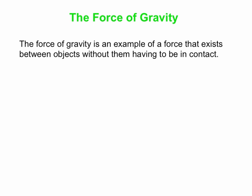Let's now talk about the force of gravity. One nice thing about the force of gravity is it's a good example of a force that exists between objects without them having to be in contact. Some forces require contact — you sit on the chair, that's when you get the force from the chair on you. But for the gravitational force, there doesn't need to be contact. The Earth is not in contact with the Sun, and yet the Sun is still exerting a force on the Earth, which makes the Earth go in a roughly circular path.